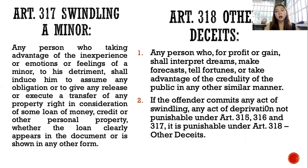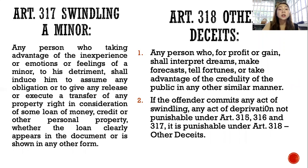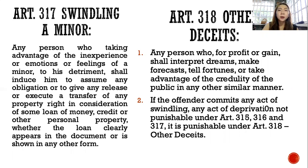Article 317 covers swindling a minor. Any person who, taking advantage of the inexperience or emotions of a minor to his detriment, shall induce him to assume any obligation, give any release, or execute any transfer of property right in consideration of some loan, money, credit, or other personal property, is liable. Article 318 covers other deceits — any person who for profit or gain shall interpret dreams, make forecasts, tell fortunes, or take advantage of the credulity of the public in any other similar manner. If the offender commits any act of swindling or deprivation not punishable under Articles 315, 316, and 317, it is punishable under Article 318.